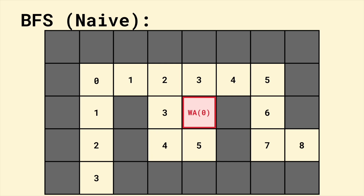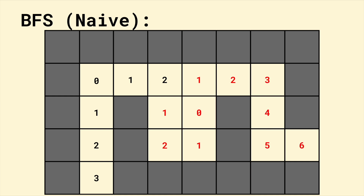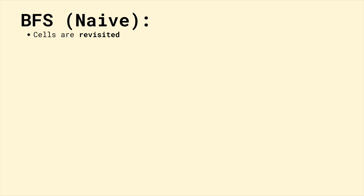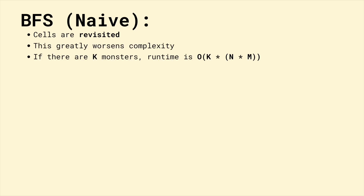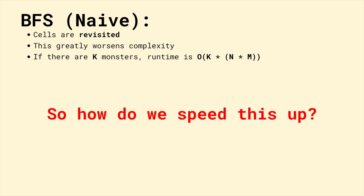The wrong answer monster marks its current cell with a distance of 0, and then the closest points with distances of 1. To get to the wrong answer monster, these cells need to take a path shorter than that to the TLE monster. It continues to spread out through the maze, and we can see that certain cells have been revisited — an inefficiency we will address later. The issue with our naive BFS is that cells are revisited. Complexity is worsened as there is a worst-case possibility that each monster visits every cell. Thus, we need a more optimized approach.